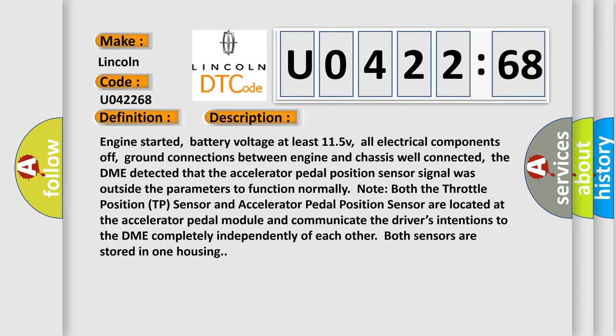Engine started, battery voltage at least 11.5V, all electrical components off, ground connections between engine and chassis well connected. The DME detected that the accelerator pedal position sensor signal was outside the parameters to function normally.